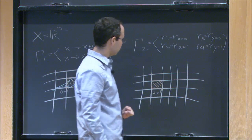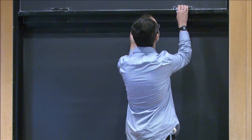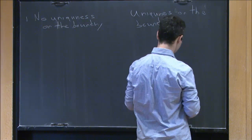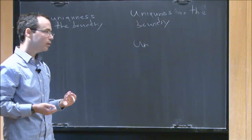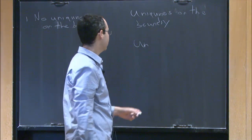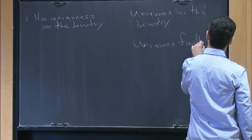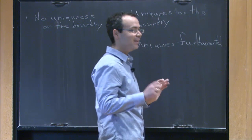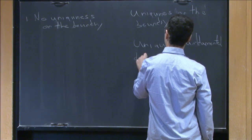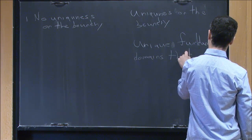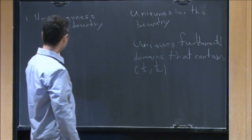So the fundamental domain here is a very rigid thing. It's not unique in the sense that you can always take different squares, but they are all images of one another. The uniqueness is: if you choose a point in the interior, you have a unique connected fundamental domain containing that point. In the reflection group case there is a unique fundamental domain, whereas for the translation group you have infinitely many such fundamental domains.